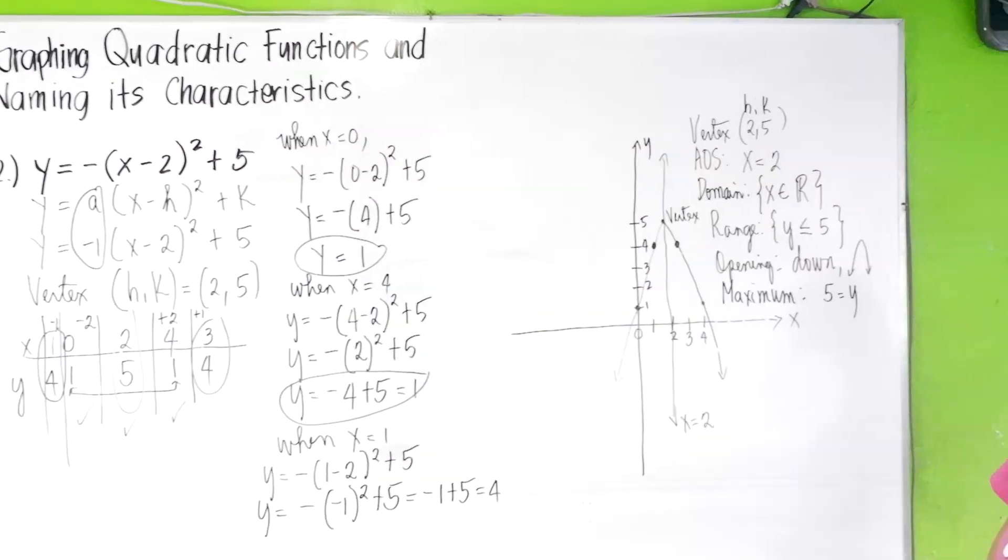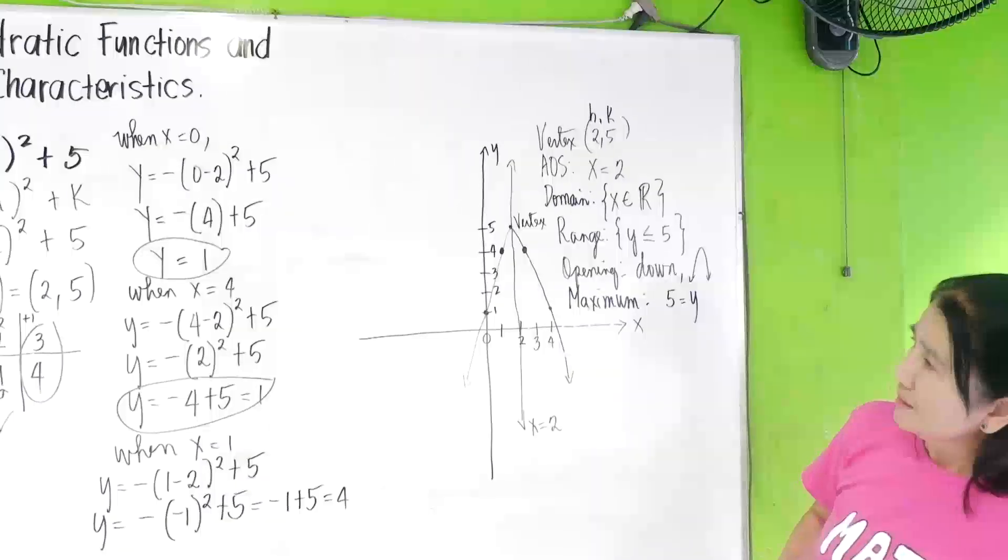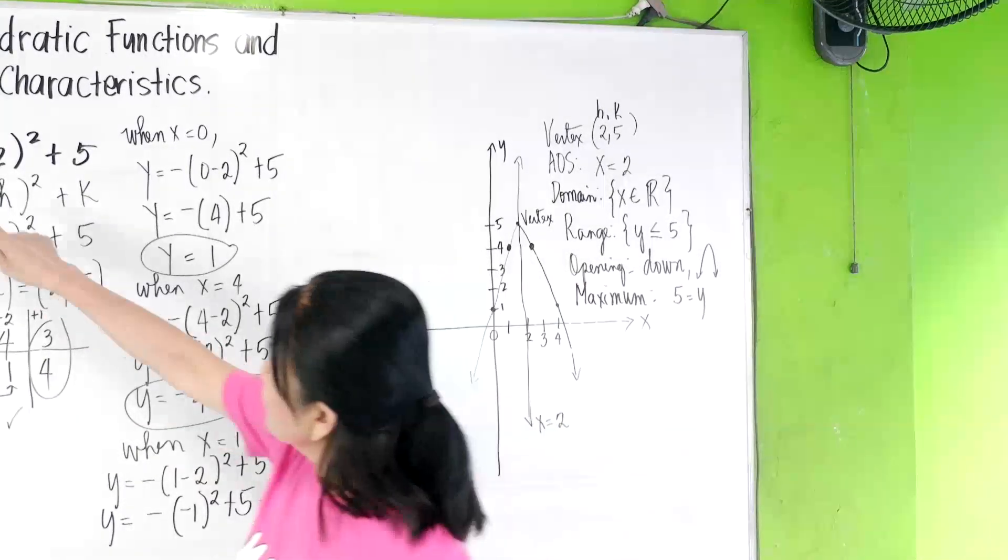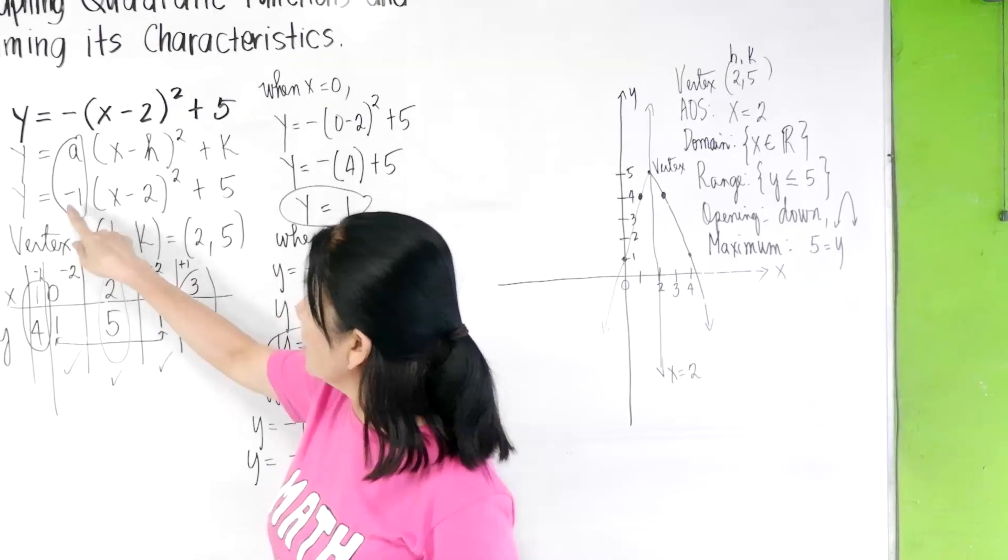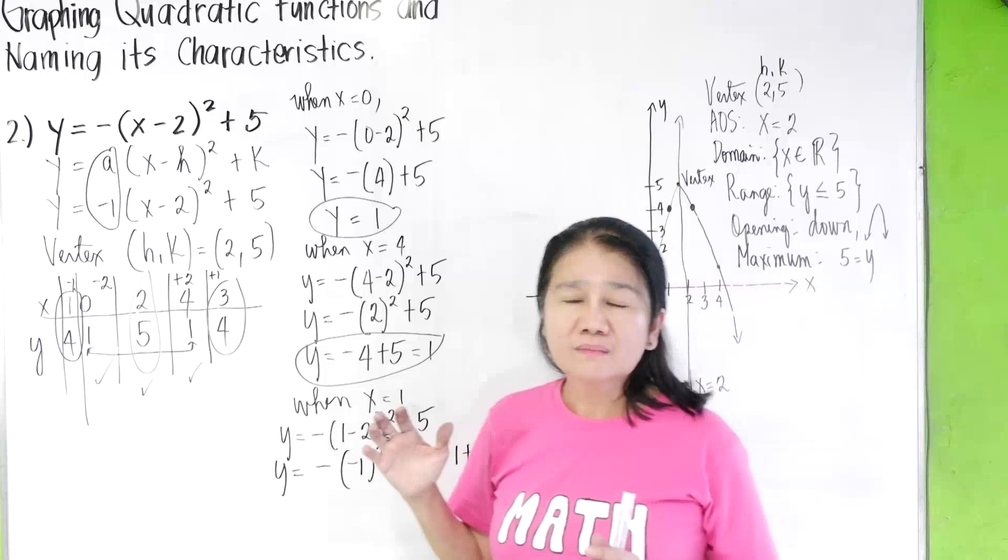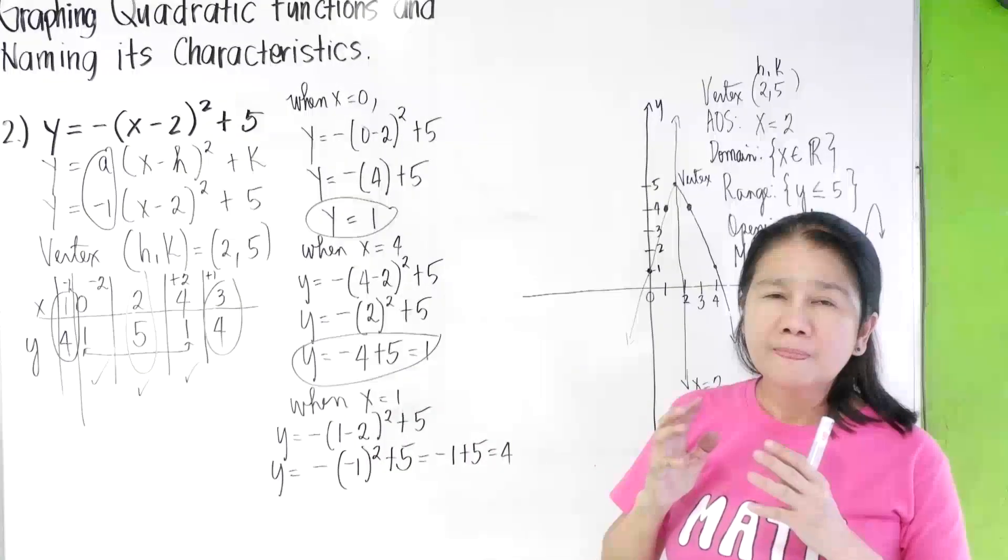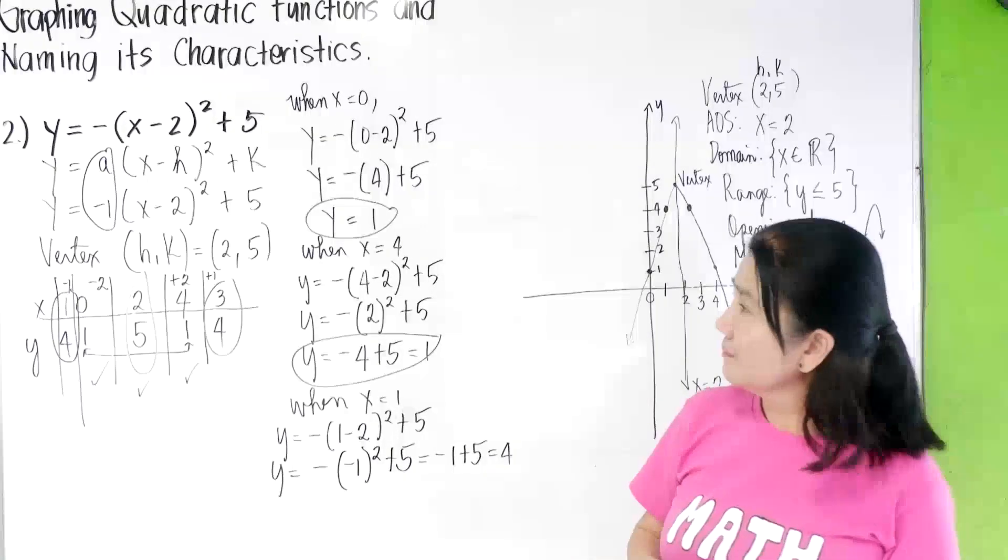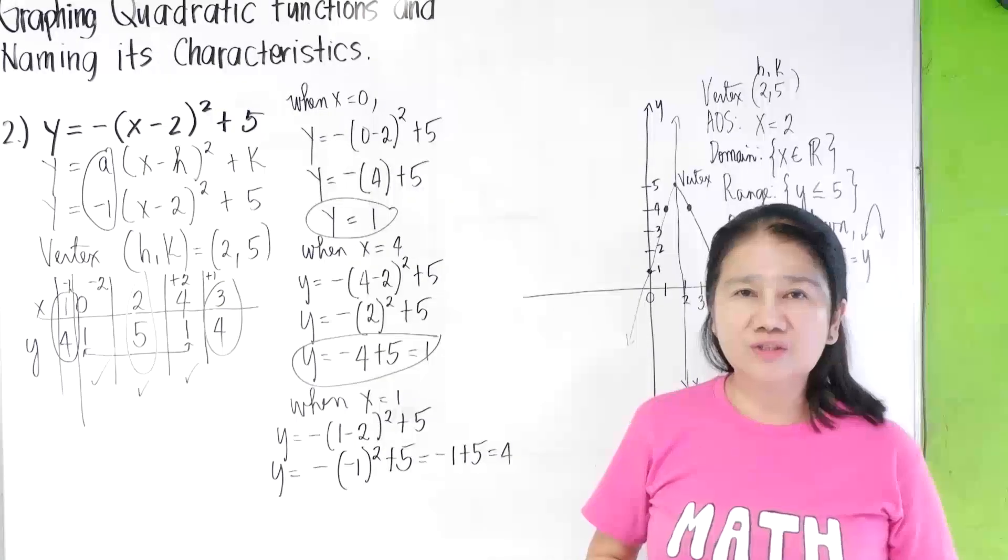So let's say your a here, the value of your a here is not one or negative one. Then your parabola will be wider. We will discuss that in another video.